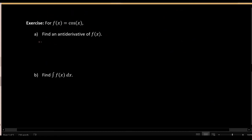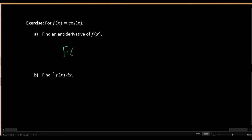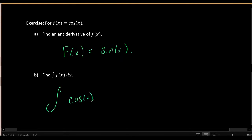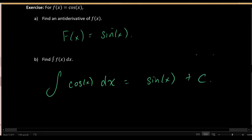The same thing is true for cosine. If I want to find the integral of cosine, I start by finding an antiderivative. An antiderivative of cosine is given by positive sine. So the integral of cosine is sine plus C — sine plus some unknown constant. This is the format of every possible antiderivative of cosine.